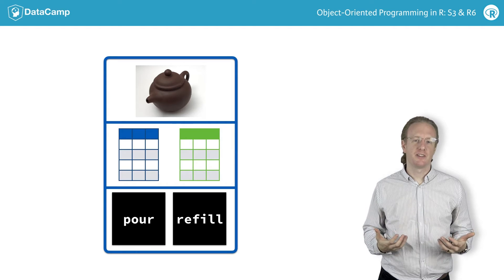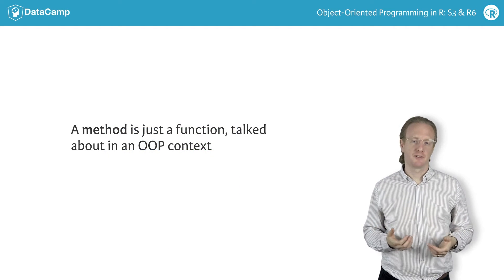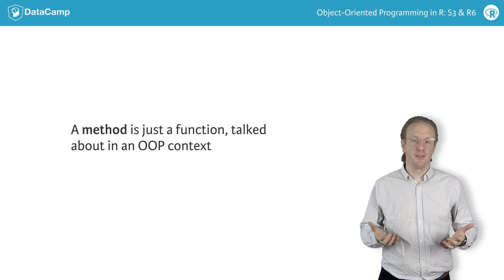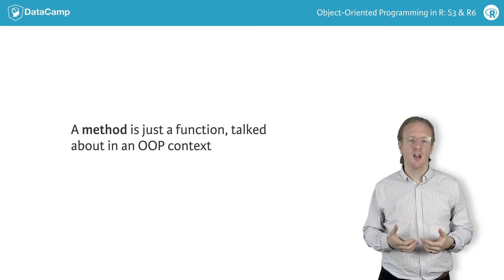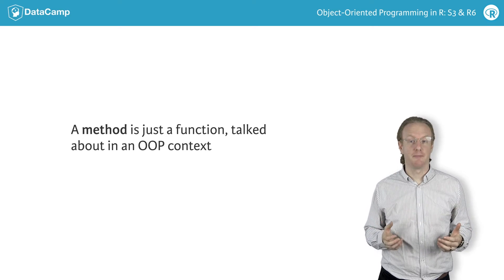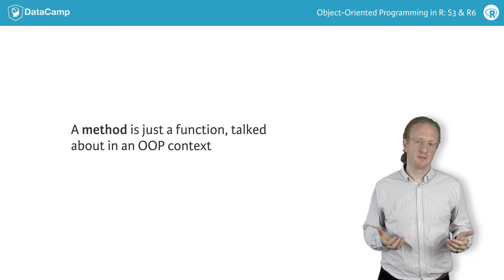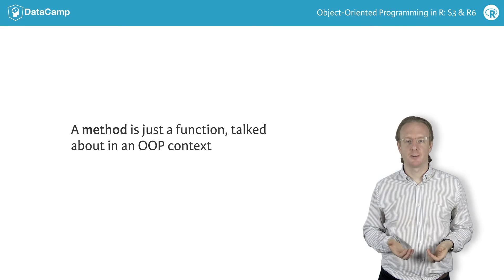In object-oriented programming, functions are known as methods. There is no special method type of variable in R, so throughout the course, whenever you hear the word method, it just means a function, but used in an object-oriented context.